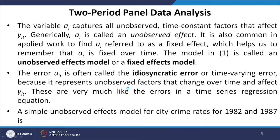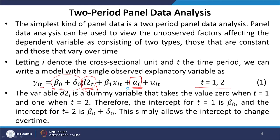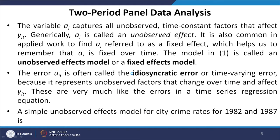The model is called an unobserved effects model or fixed effects model. The error u_it is often called the idiosyncratic error or time-varying error, because it represents unobserved factors that change over time and affect y_it. So we have two unobserved components: one that varies with time and one that does not vary with time — very much like the errors in a time series regression equation.